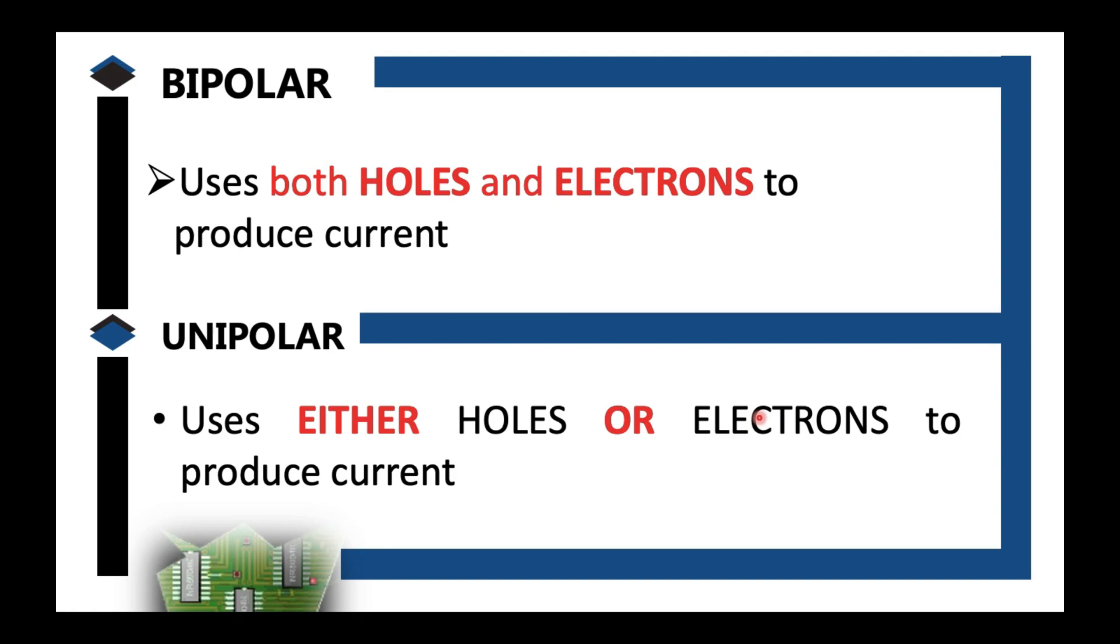Well, yes, sort of, but not exactly. Bipolar means these are devices that use both holes and electrons at the same time to produce current. When we say unipolar, they use either holes only or electrons only to produce current.